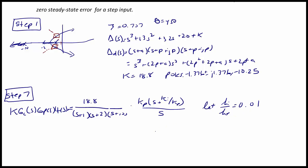Then use the magnitude criterion to get both values. Our magnitude criterion is |18.8·Kp(s+0.01)/[(s+1)(s+2)(s+10)s]| = 1 when s = -1.376 + j1.376.